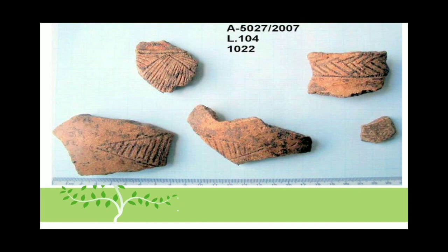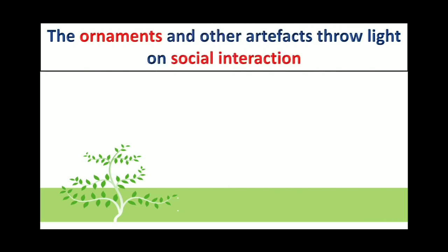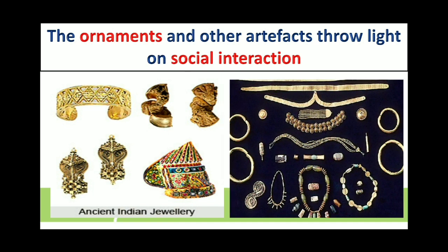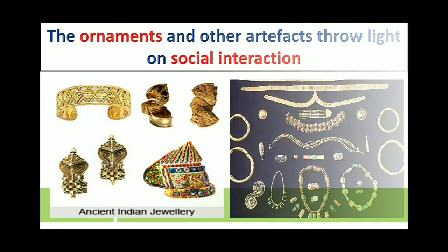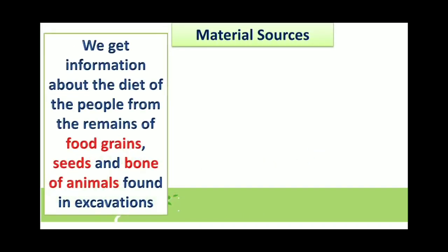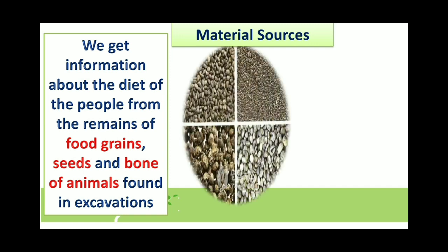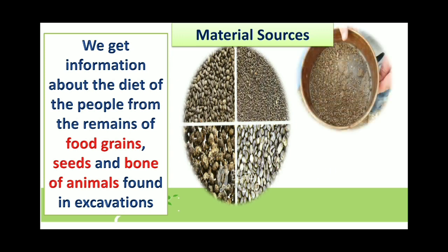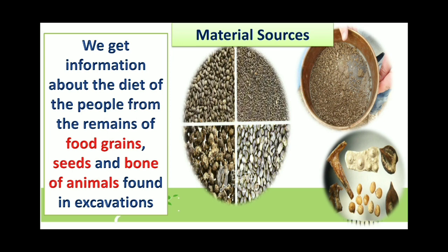Here you can see the designs and color patterns. The ornaments and other artifacts throw light on social interactions — we can conclude things related to social interaction. We also get information about the diet of the people from the remains of food grains, seeds, and bones of animals found in excavations.